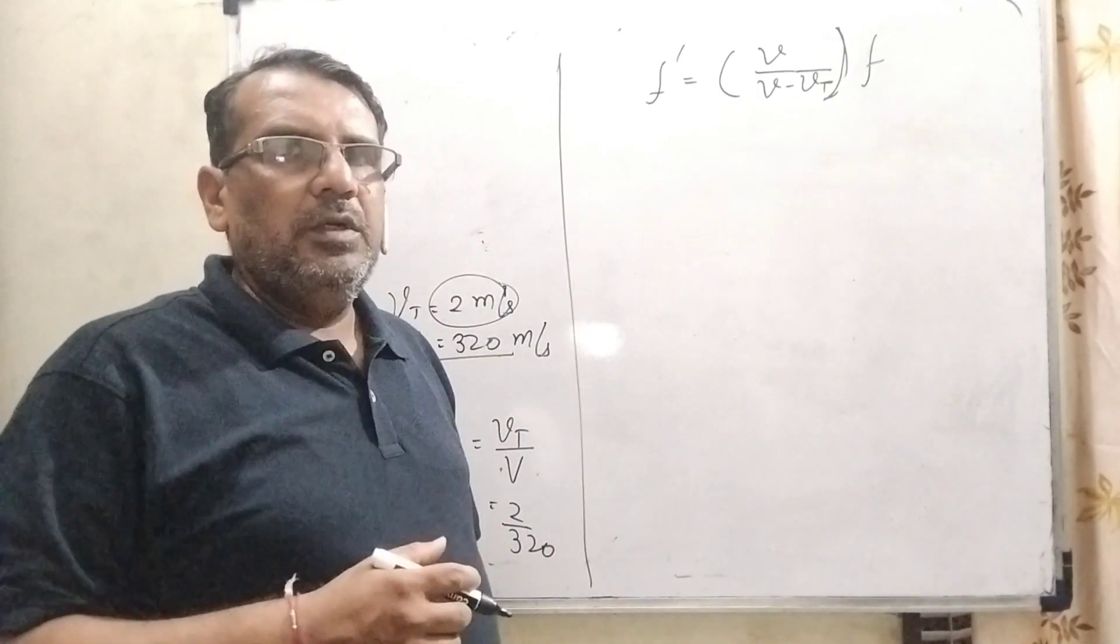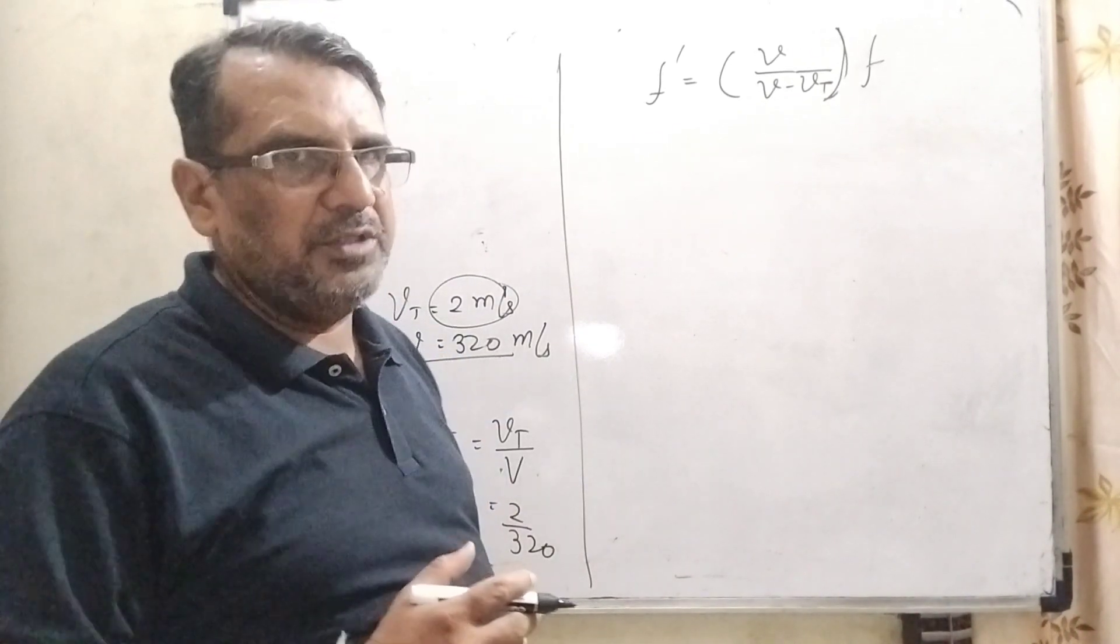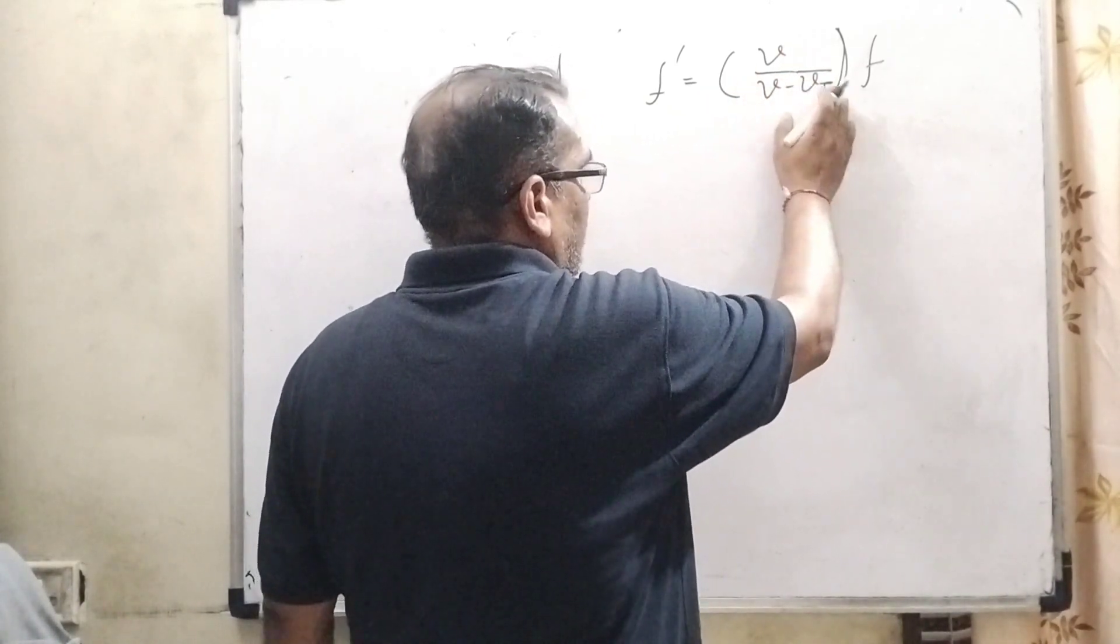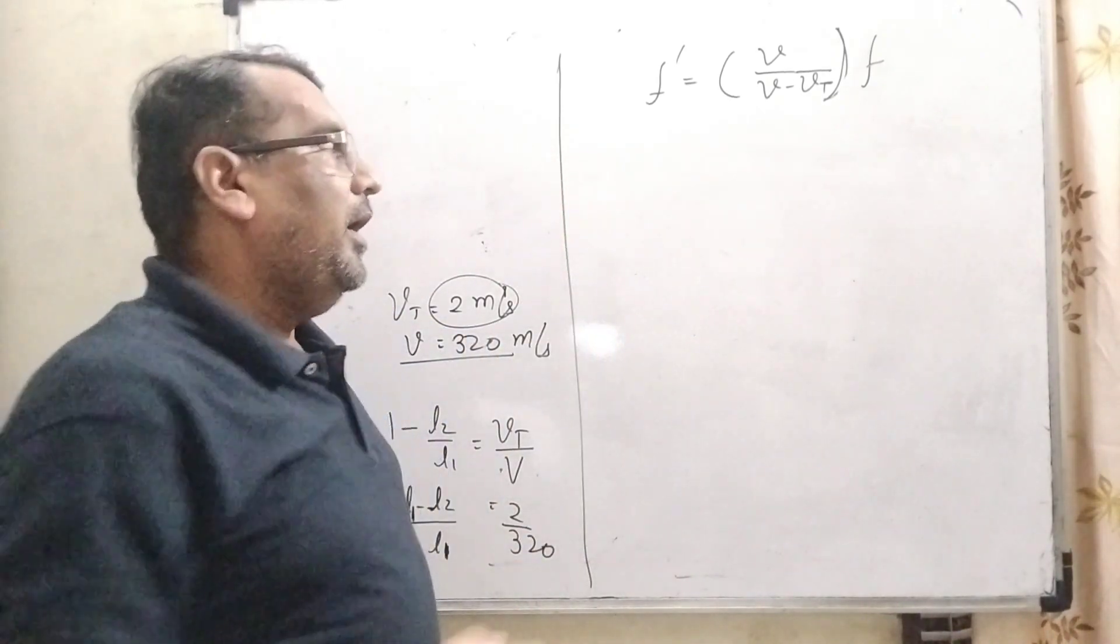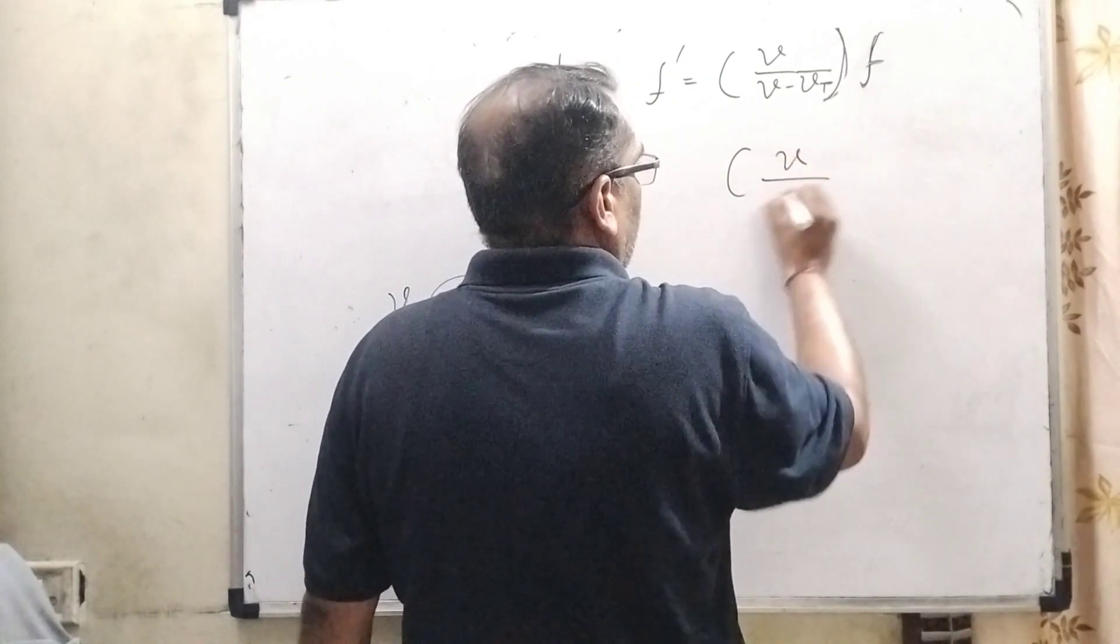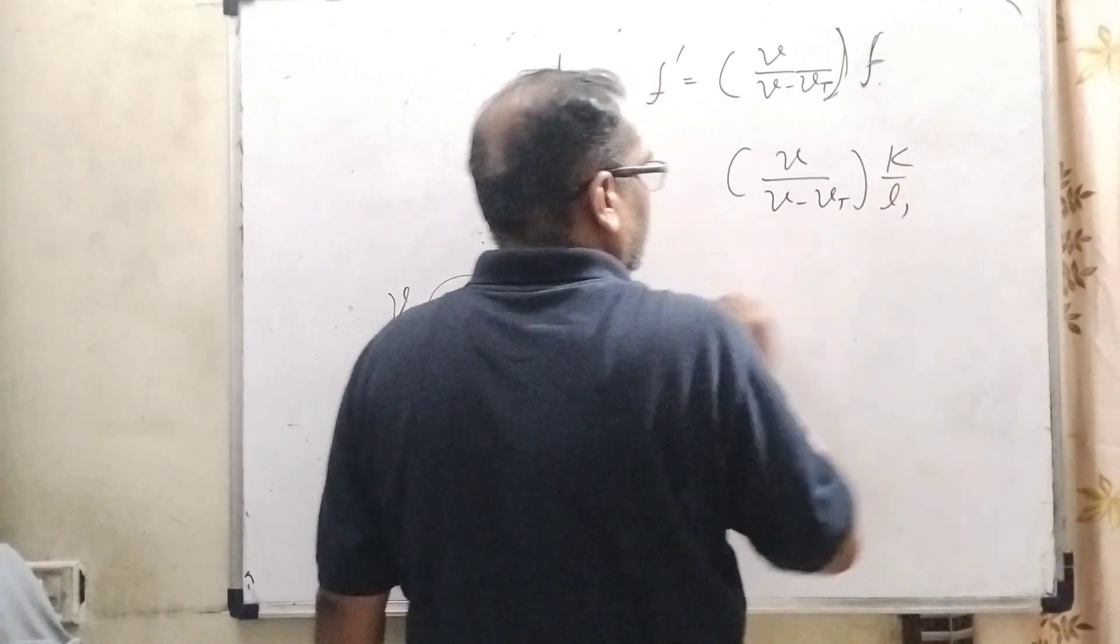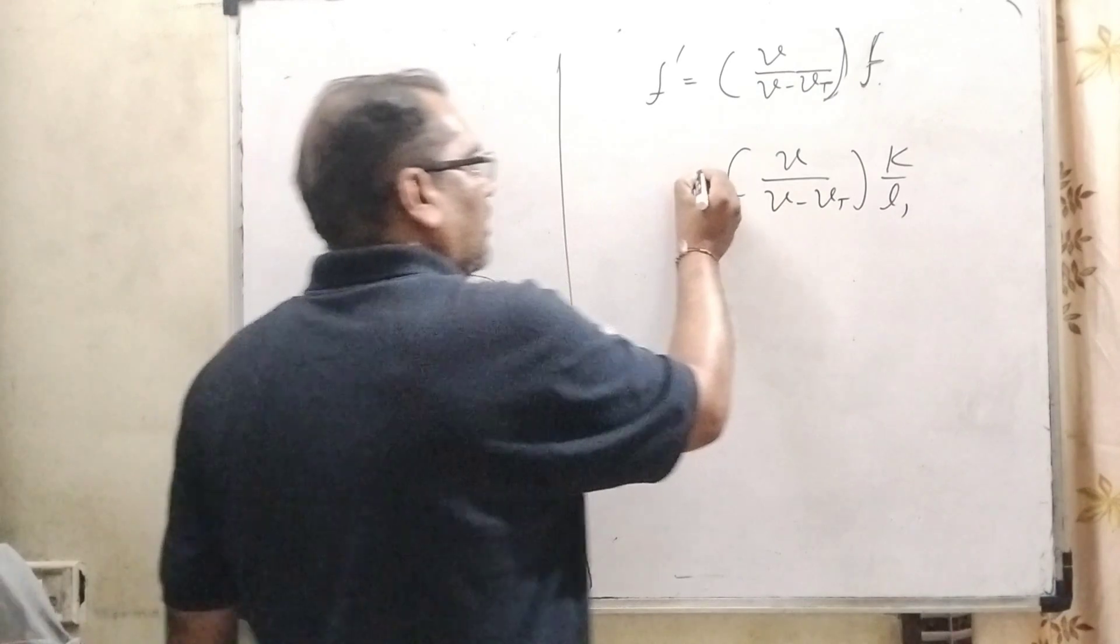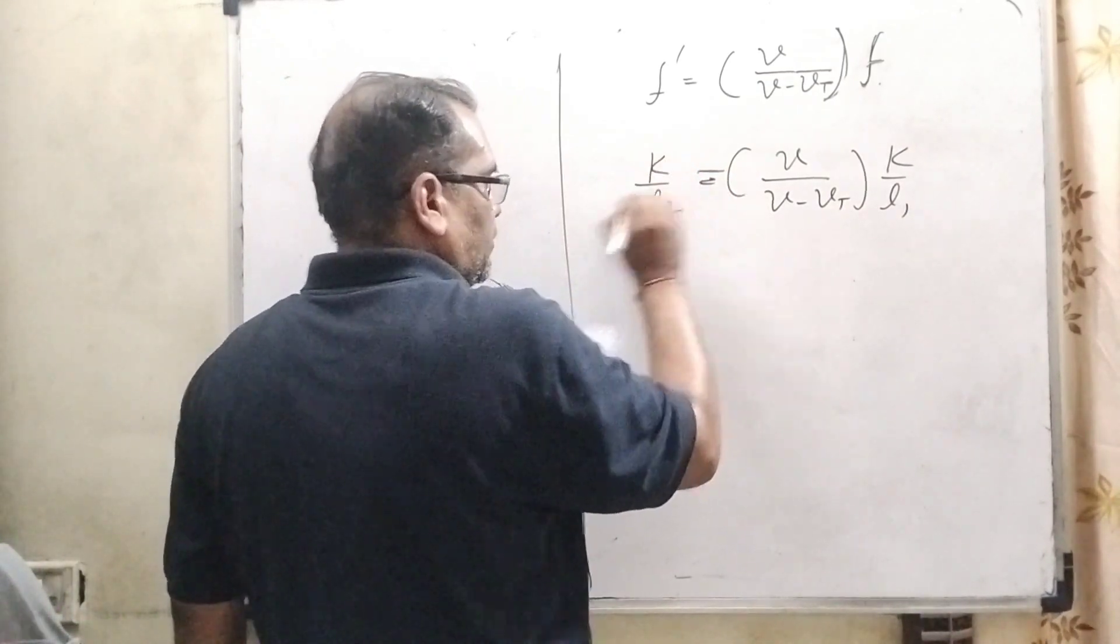Now we are using the Doppler effect. First case: when the source of sound is moving towards the observer, we use F dash equals V upon V minus VT. Here VT is the source of sound, that is the tuning fork. F is the initial frequency. V upon V minus VT times the initial frequency K by L1. At that time, the length of the organ pipe will be changed. Then it becomes K by L2.